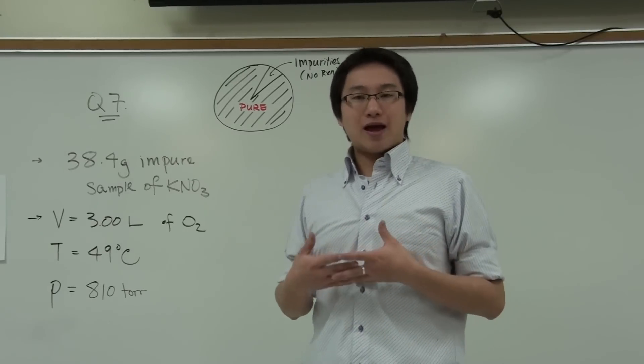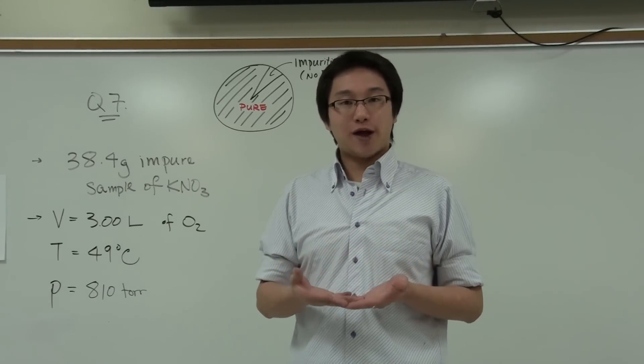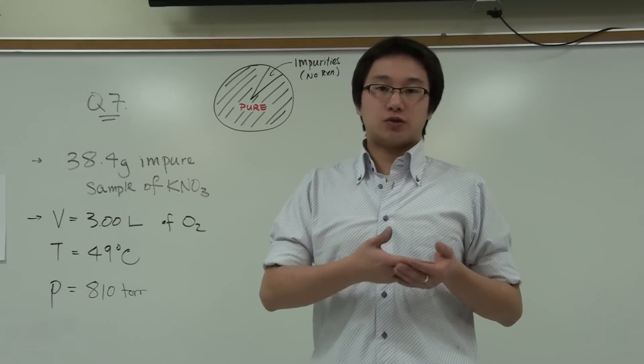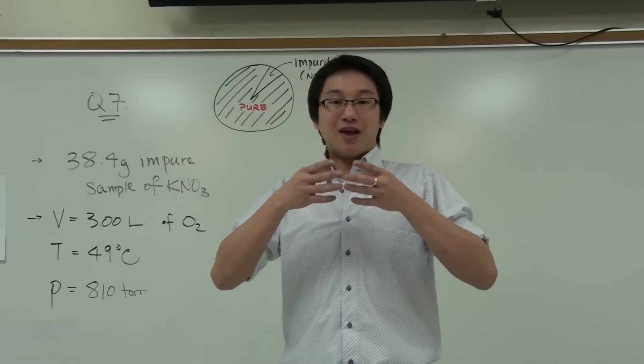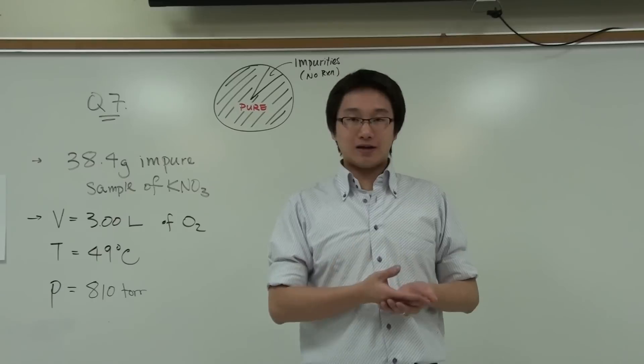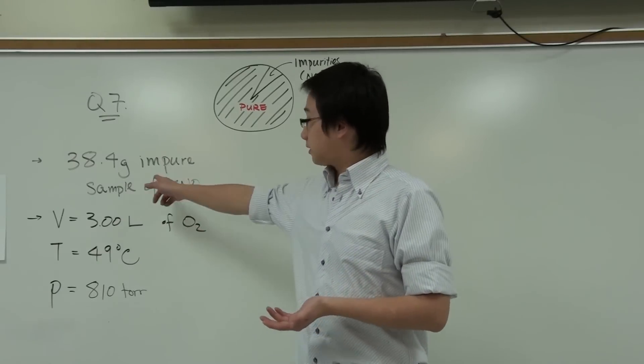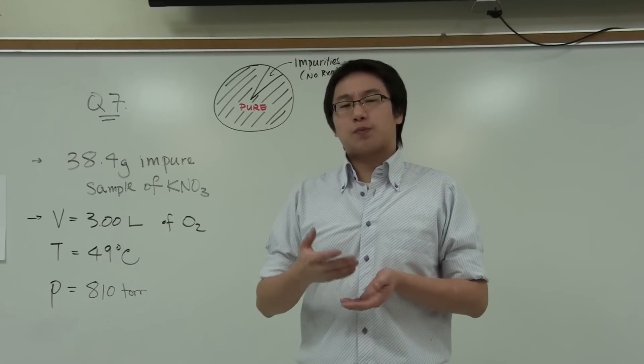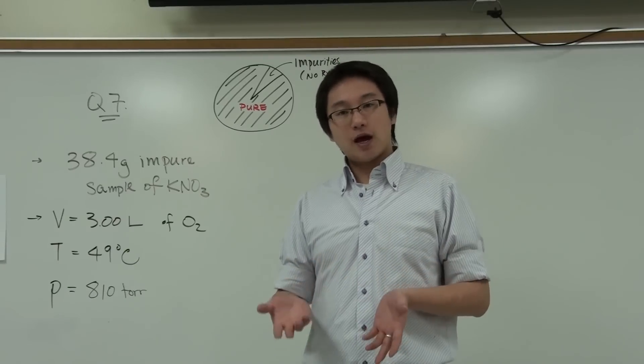The first question we should ask ourselves is do you understand the entire problem? The problem says that there is an impure sample of potassium nitrate. It is 38.4 grams. It is listed in the problem. And then it asks you what is the percentage of the pure potassium nitrate in the sample.